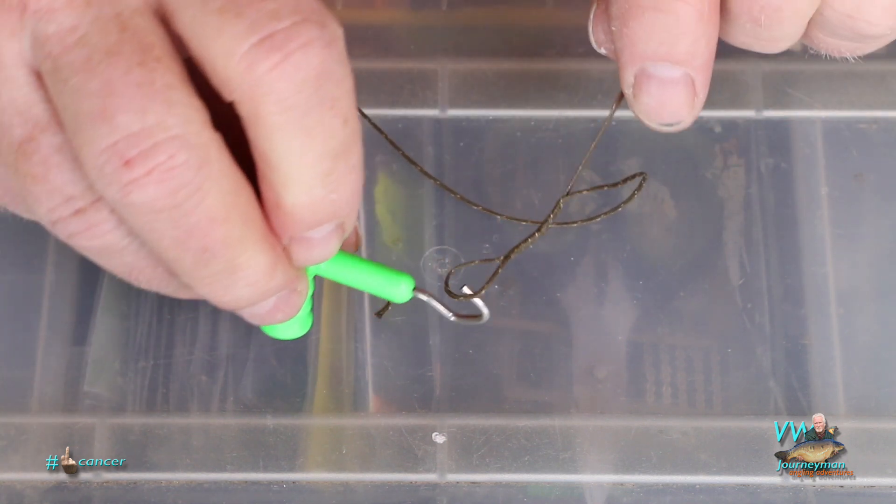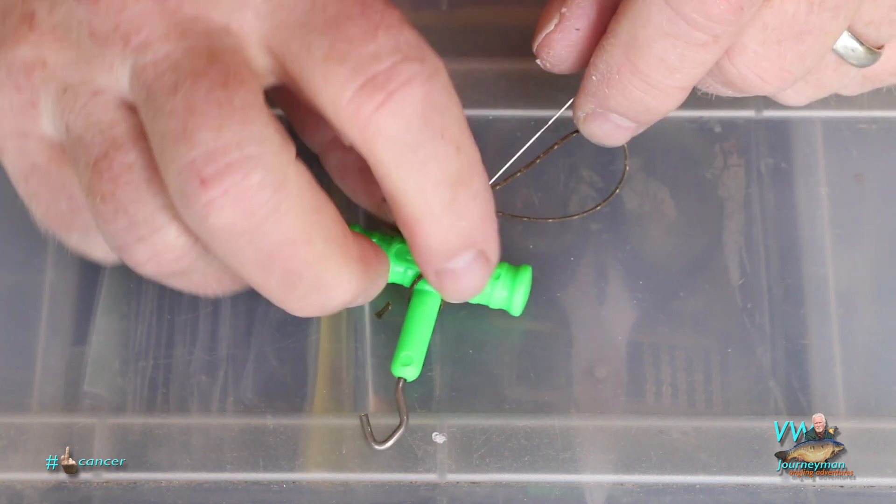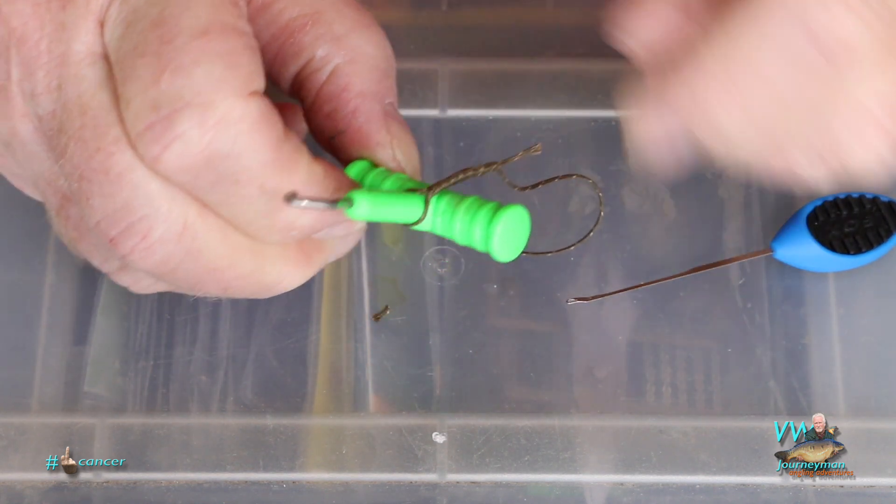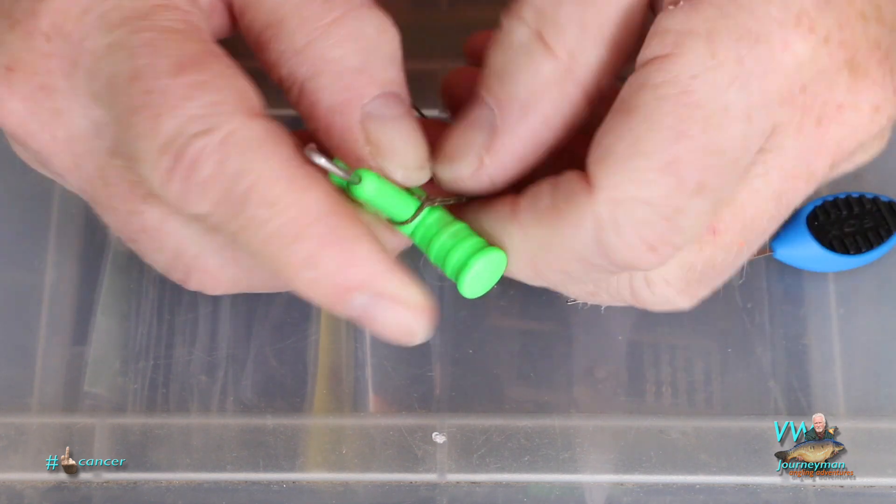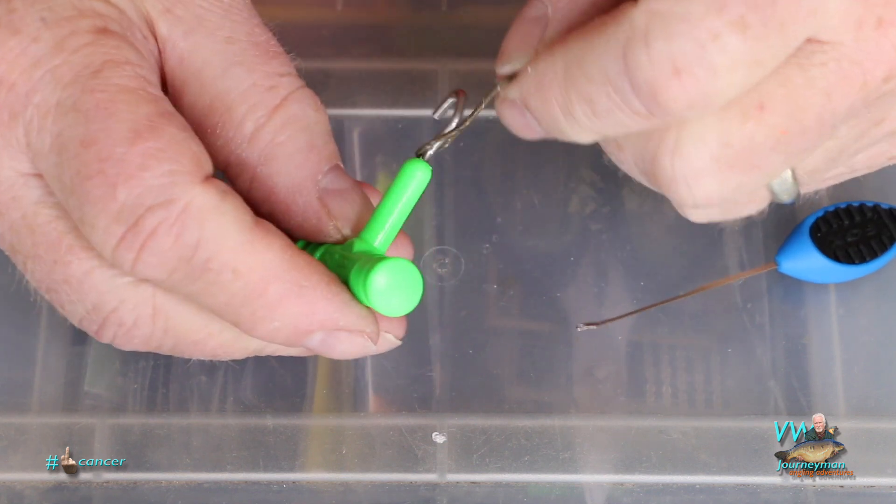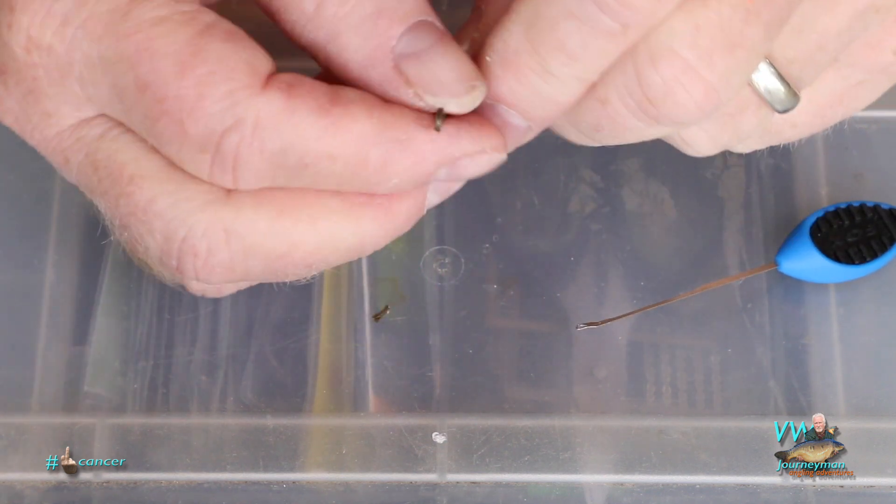Now what I tend to do is use my puller tool as a mandrel, if you like, to stop me closing it completely, so I end up making sure I've got a loop on the end of it. Then just tighten it down, and that's your loop.